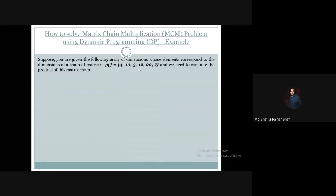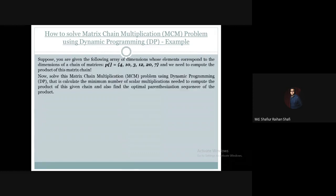Suppose we have an array which indicates the dimensions of the matrices. The array of dimensions is: 4, 10, 3, 12, 20, 7. We want to use dynamic programming to solve the matrix chain multiplication problem.